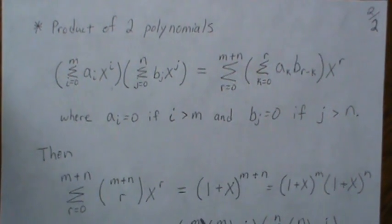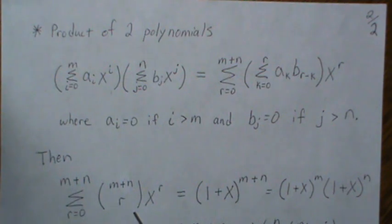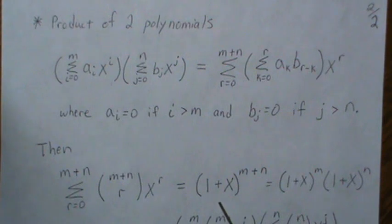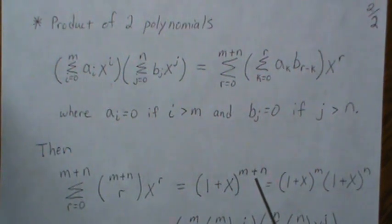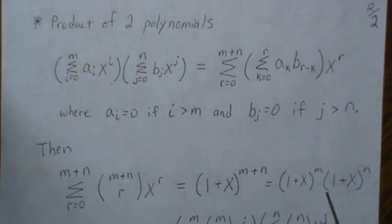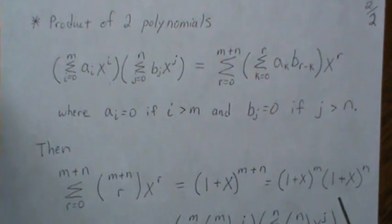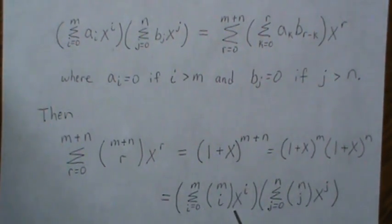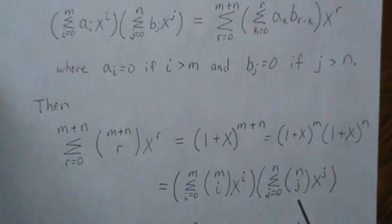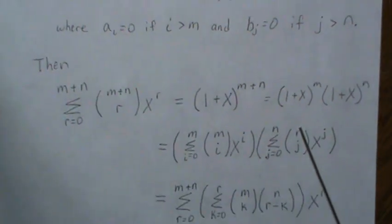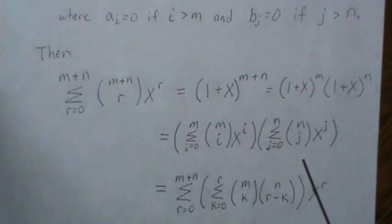If we look at this first equation, this is the binomial expansion of one plus x raised to m plus n. Since this is raised to m plus n, it can be broken apart and each one written in a binomial expansion. Now we have the product of two polynomials, so we bring in the second point.